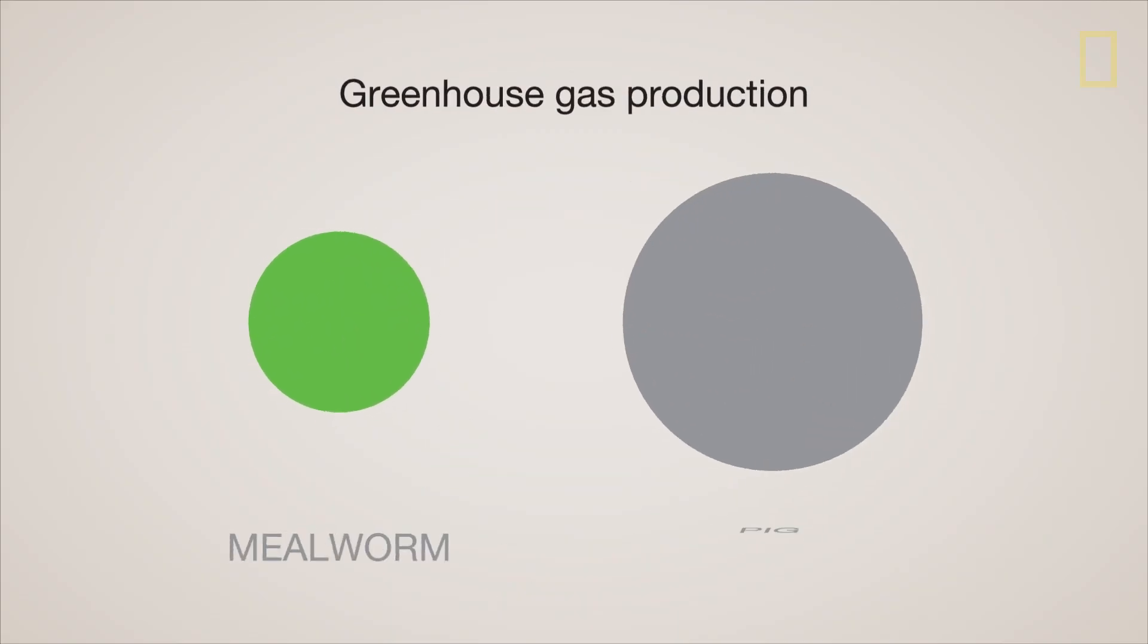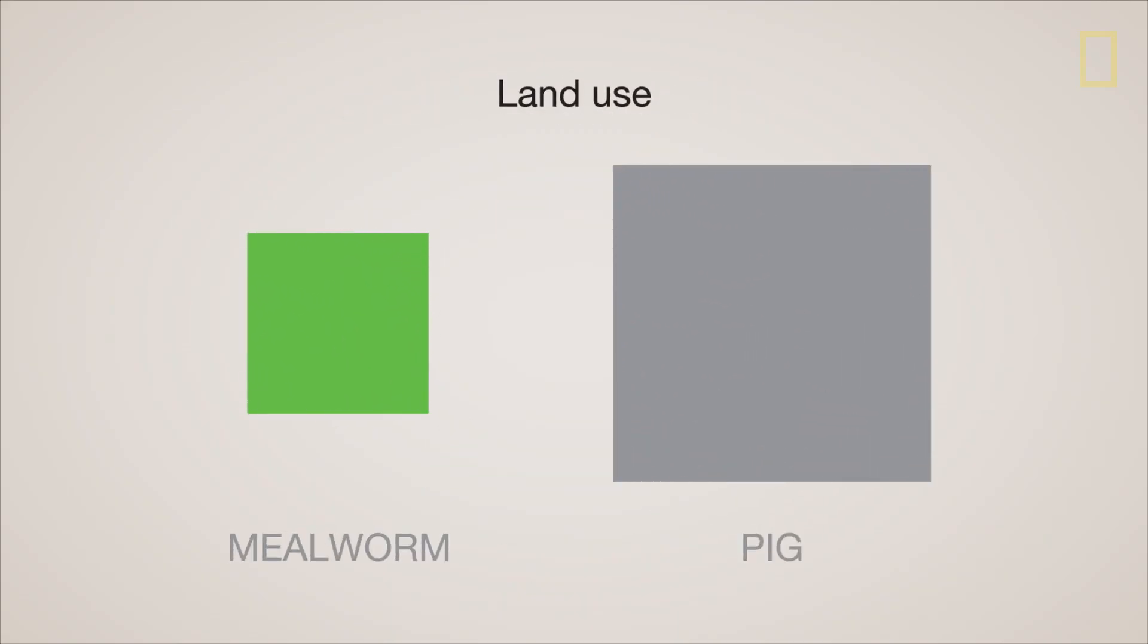In addition to all these benefits, insects emit fewer greenhouse gases and require less land to produce than livestock.